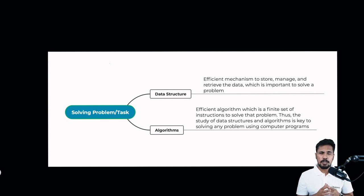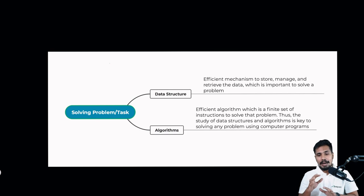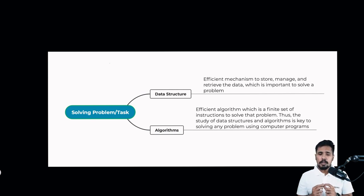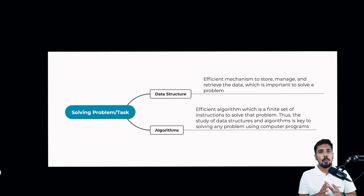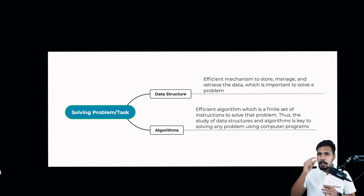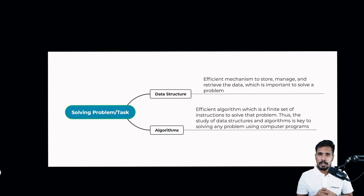Data structures speak about how well we store, manage, and retrieve data. The second point is algorithms — a finite set of instructions to solve a problem. Data structures deal with how well we store and manage data, while algorithms are the finite steps to solve a particular problem.